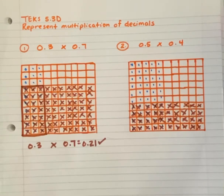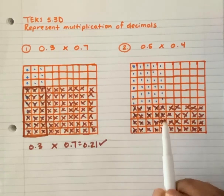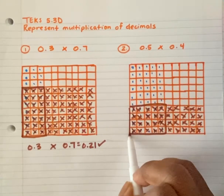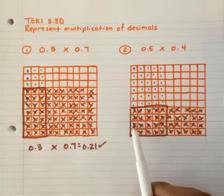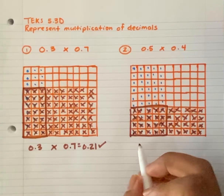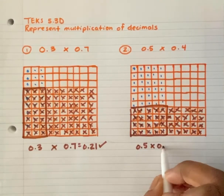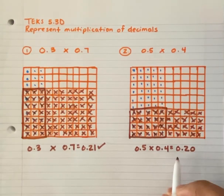Exactly — where the two colors or the two symbols intersect. They intersect right here. Now let's count: 1, 2, 3, 4, 5, 6, 7, 8, 9, 10, 11, 12, 13, 14, 15, 16, 17, 18, 19, 20. That's 20 hundredths. So my final answer is 0.5 times 0.4 equals 0.20 hundredths — you could also write that as 0.2 tenths.